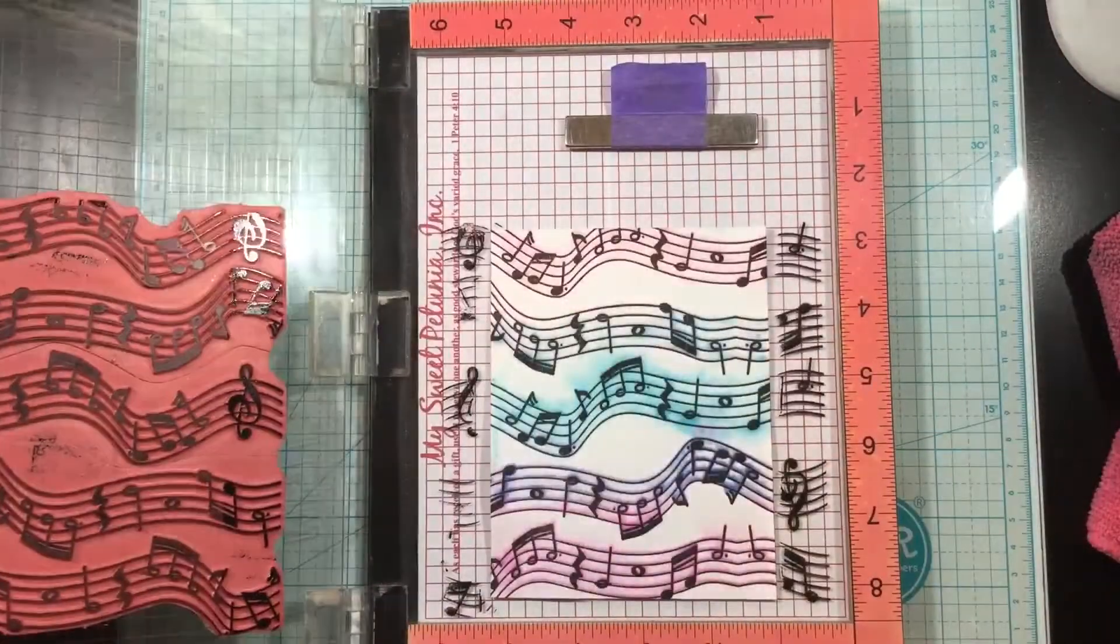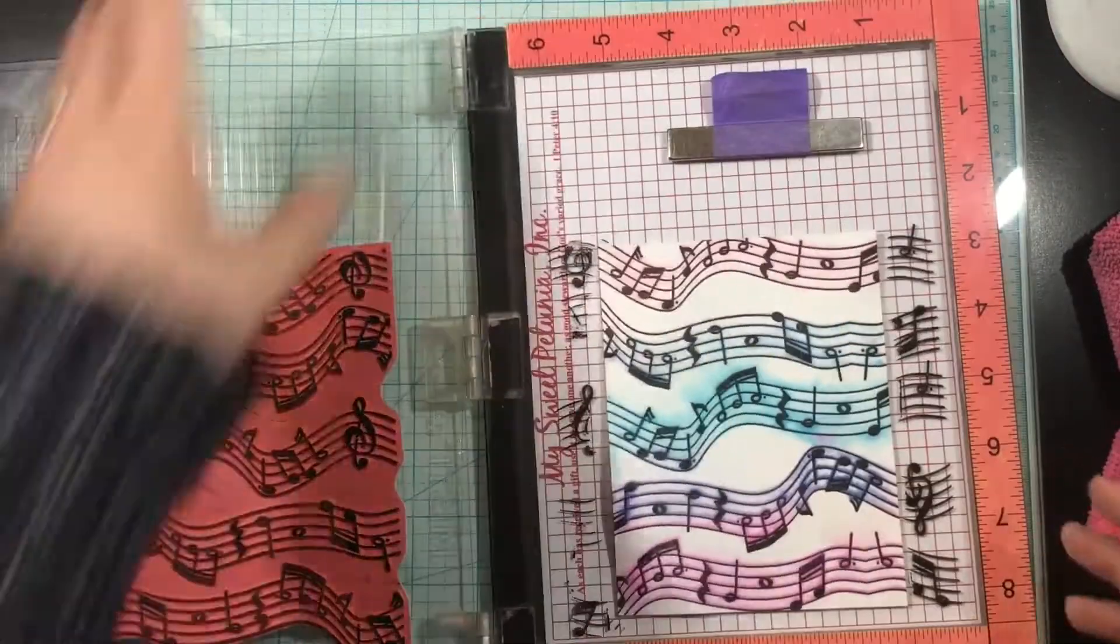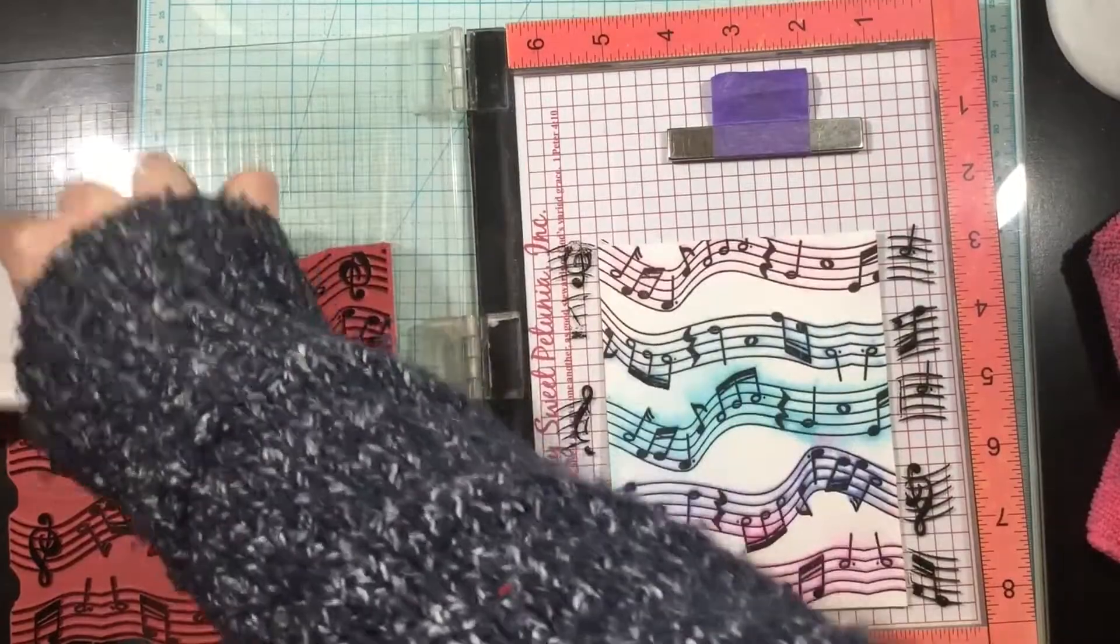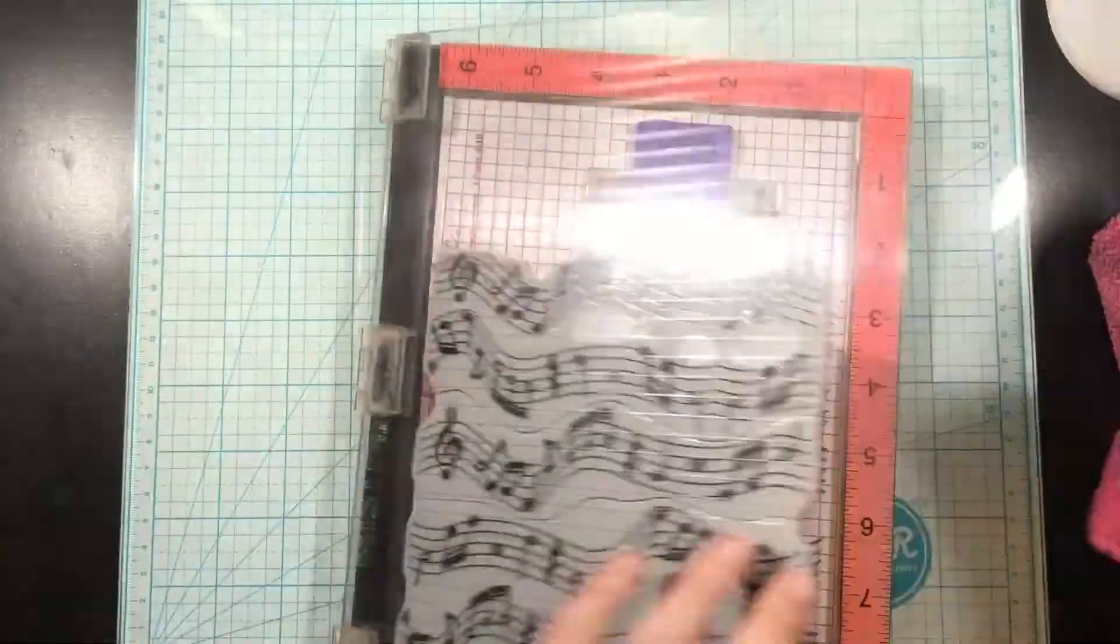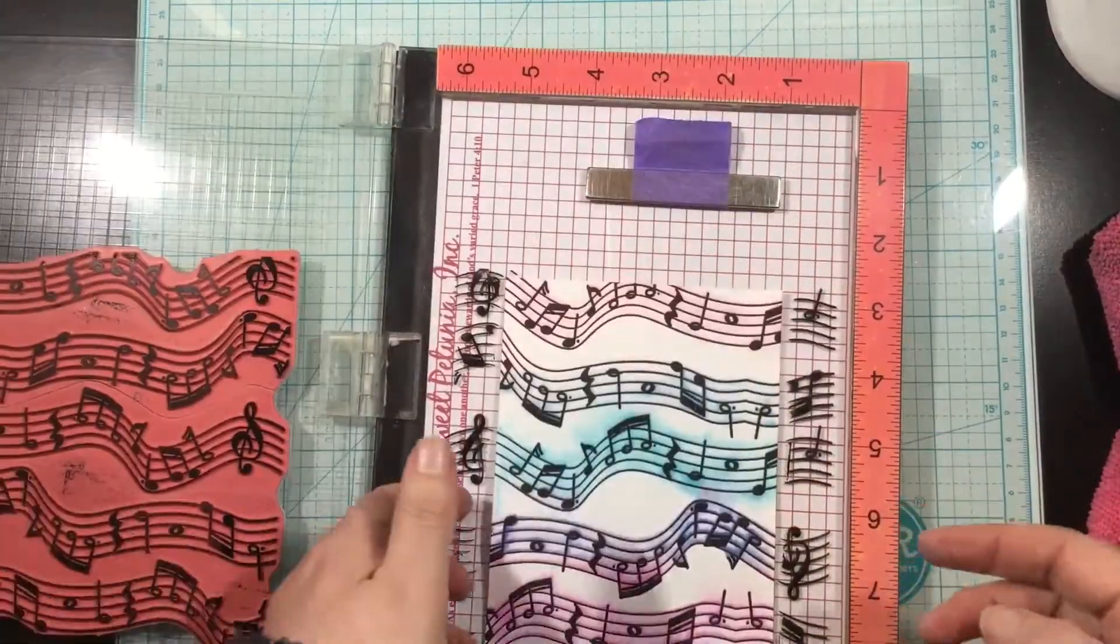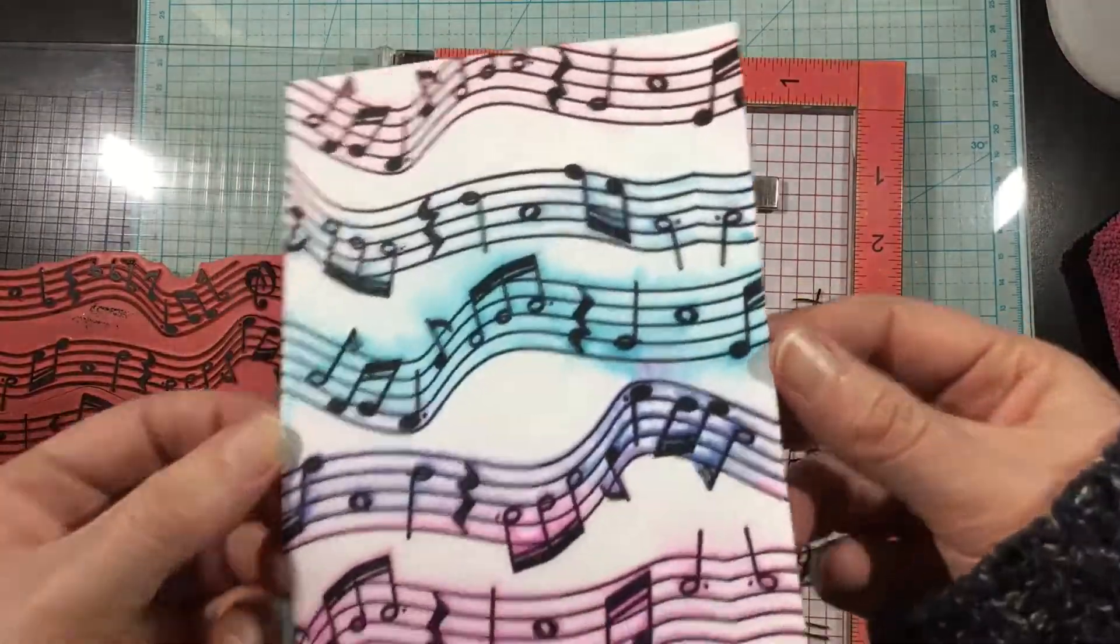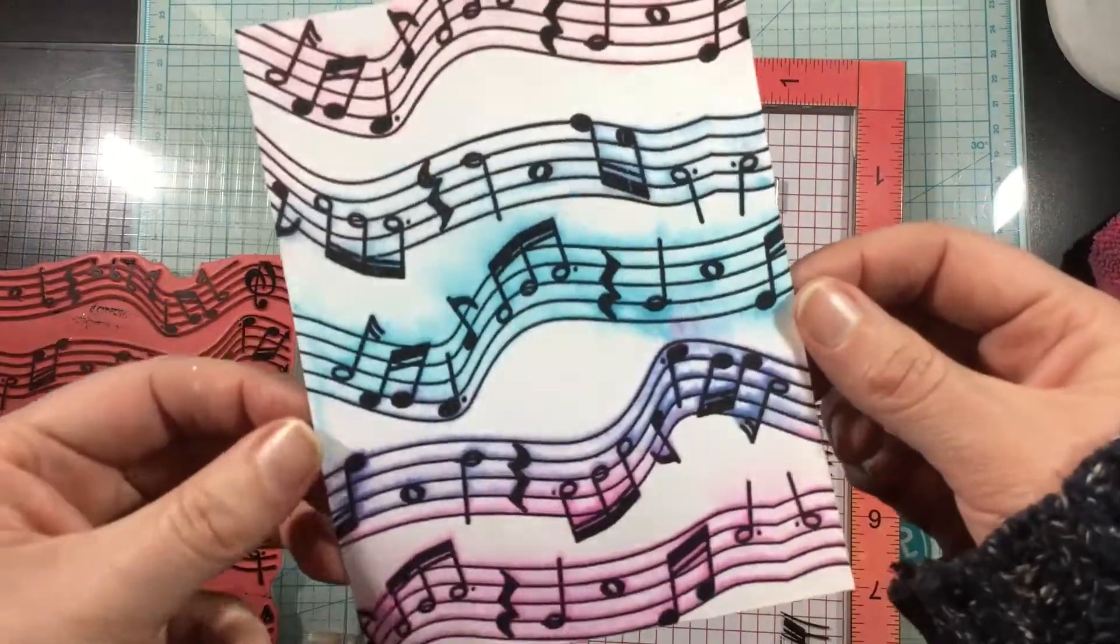I'm stamping this down and check that out. Now you have the black music notes from that piano recital stamp set and you have this bleeding effect of the inks behind it. This is definitely not a new technique, but it's one of my favorites. I think it's so fun.